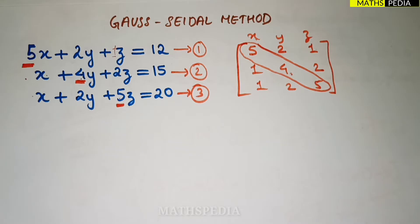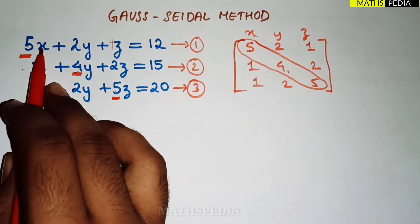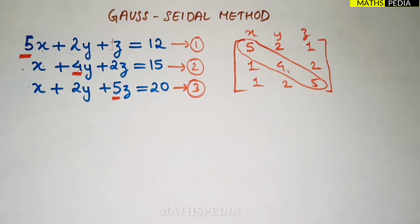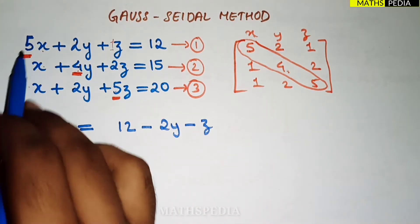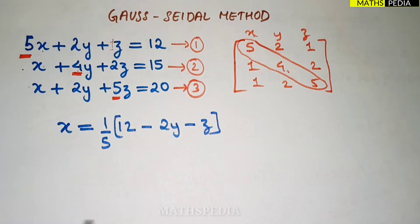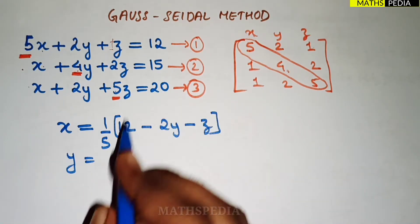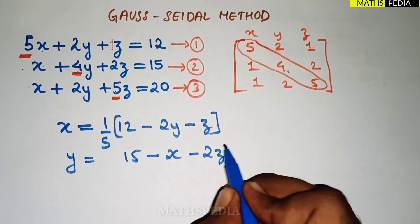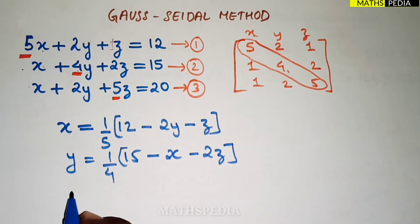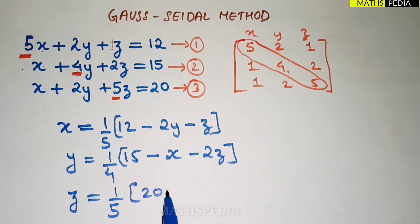The next step is to isolate each variable on one side. From the first equation, x = (1/5)(12 − 2y − z). From the second equation, y = (1/4)(15 − x − 2z). From the third equation, z = (1/5)(20 − x − 2y). These three rearranged equations will be used for the iterative process.